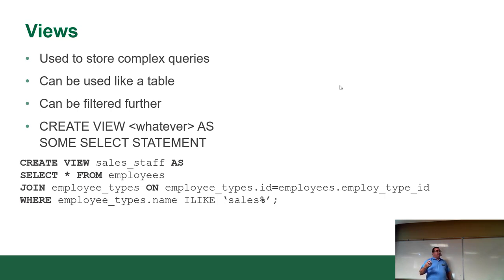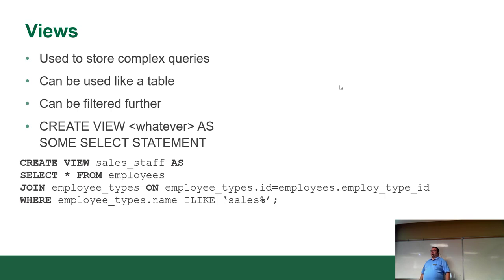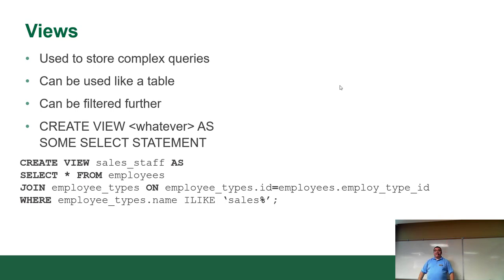Some purposes of views: first, storing complex queries. Second, abstraction — maybe you don't trust your desktop developers to understand your database structure, so you give them a pre-canned view. They just do SELECT * FROM sales_staff and it populates the dropdown without needing to know the join or the magic numbers.